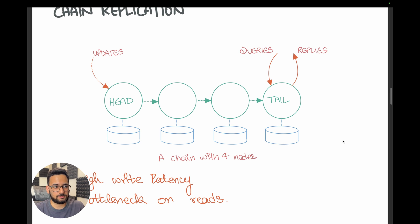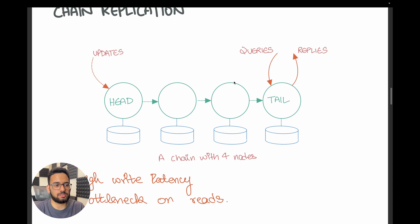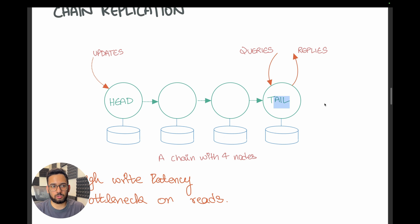There are two problems with this approach. The first is high write latency. In quorum-based replication, the majority of nodes are the minimum requirement to acknowledge a write — so if you had 60 nodes, once 31 acknowledged the write you could return the acknowledgement to the client. However, in a chain replication-based system, every single node must have a copy of the data before you can acknowledge the write. Second, there is a bottleneck on reads: the tail is the node serving all reads, so if you face many read queries, you are constrained by the maximum number of requests that one node can serve.